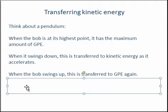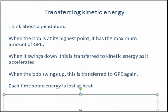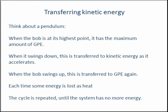But why doesn't this go on forever? Well, the answer is each time the bob swings, some energy is lost as heat. In each of the swings, some of the energy is transferred to the environment as heat. As the cycle is repeated, all of the energy will eventually be lost and the bob will no longer swing.